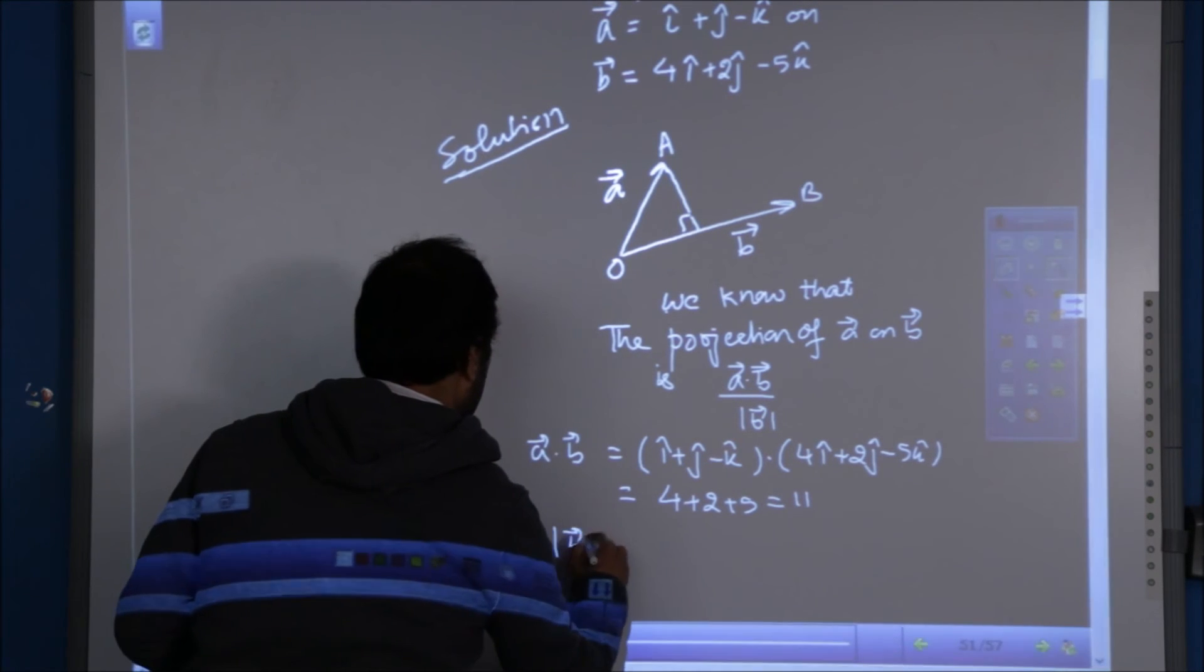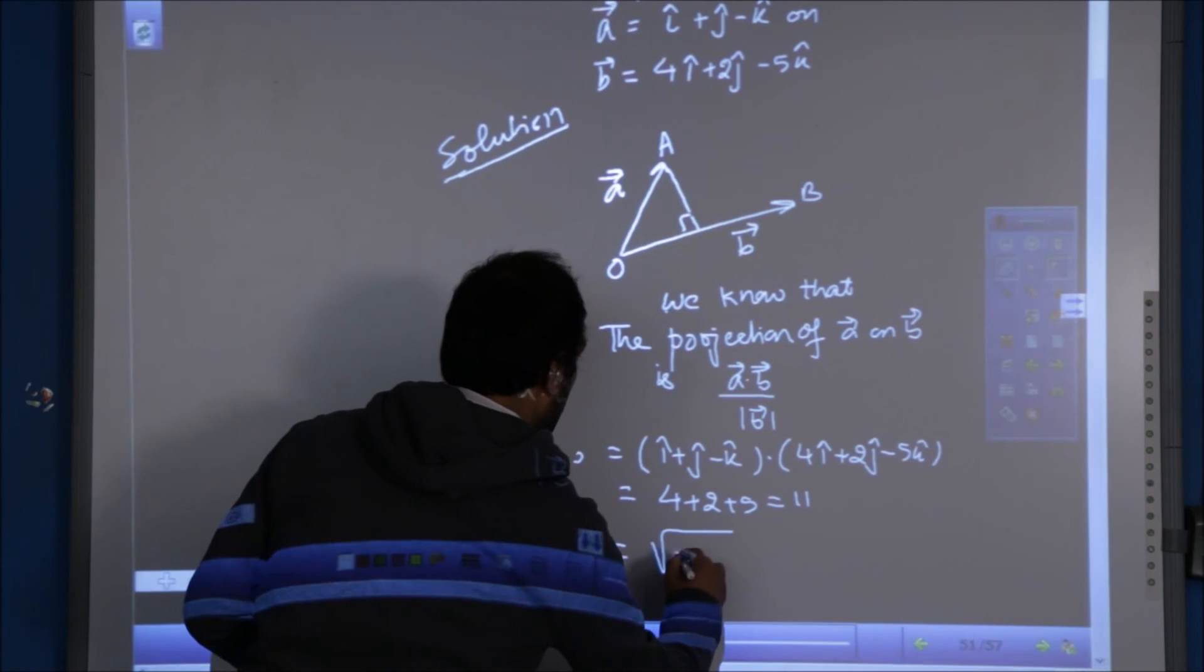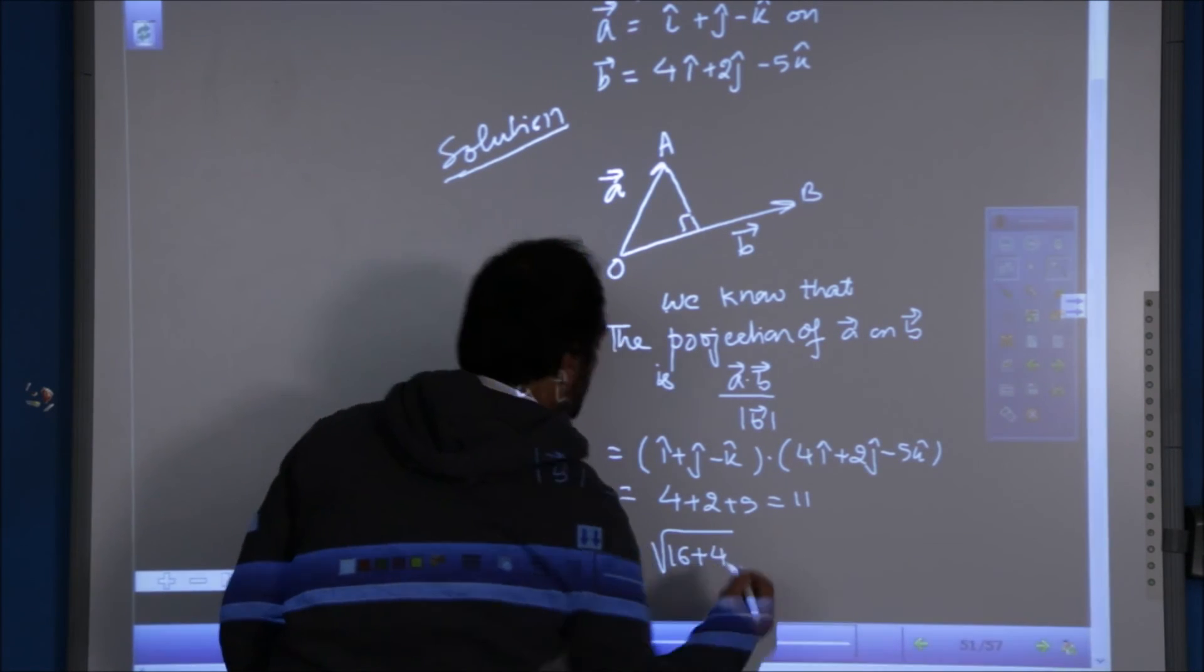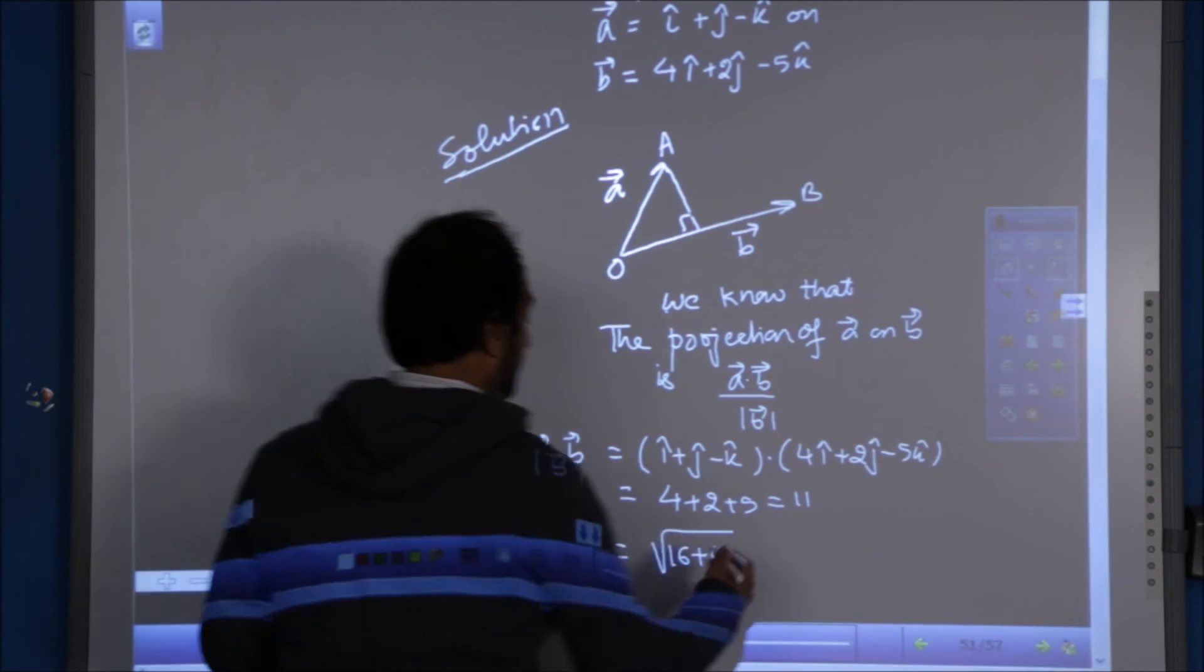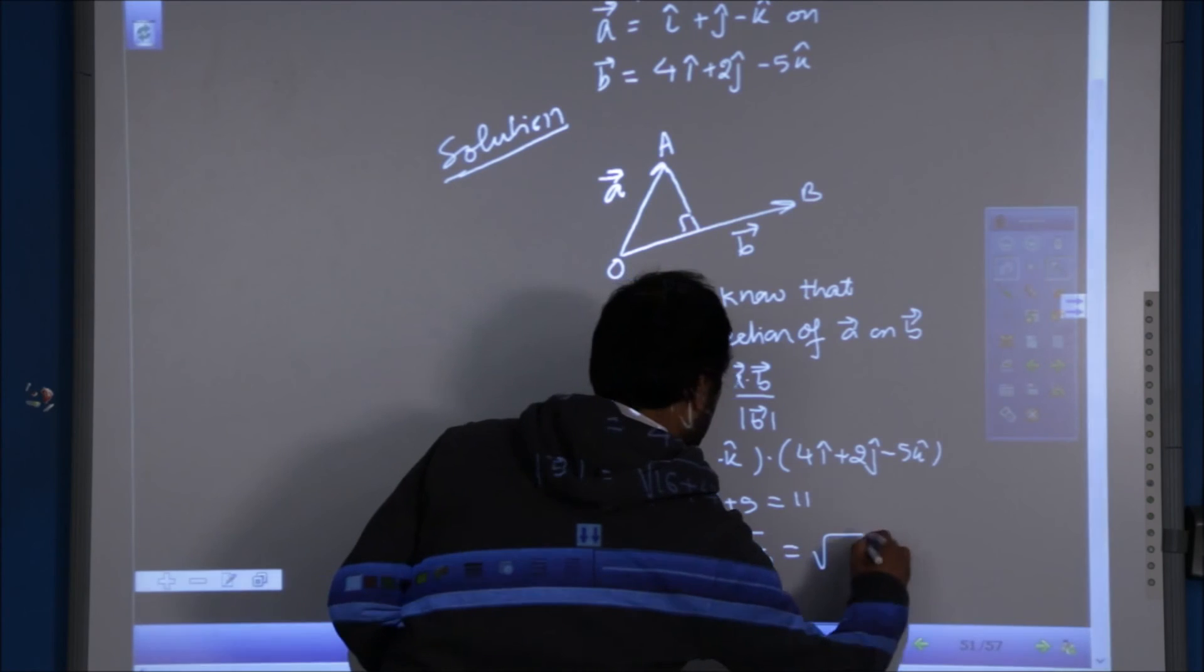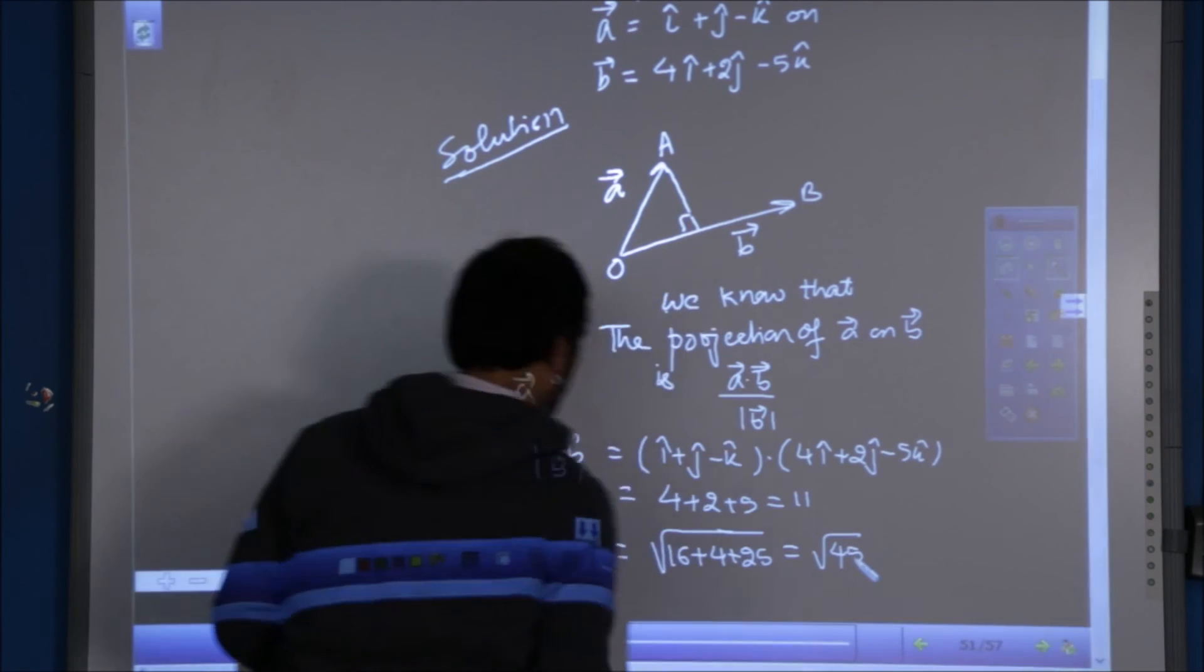And mod B is under root of 4 square, which is 16, and 2 square, which is 4, and minus 5 square, that is 25. So this is 45.